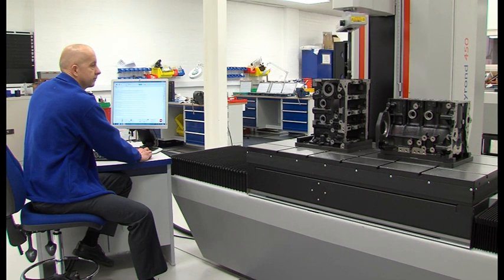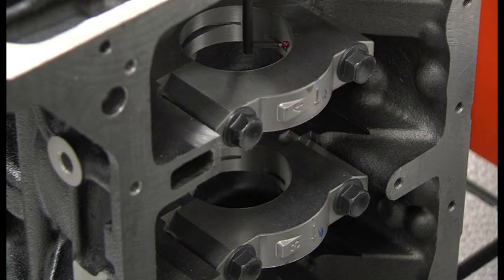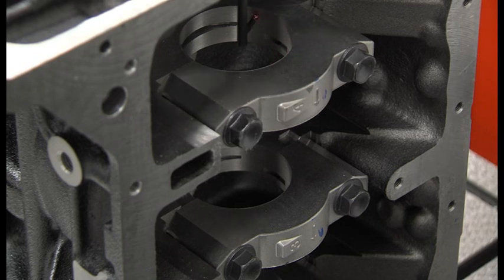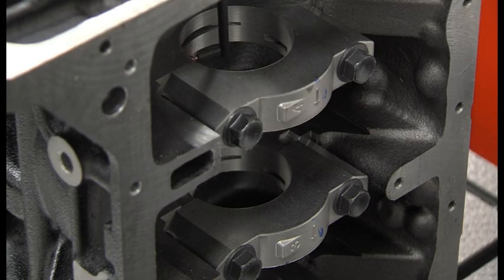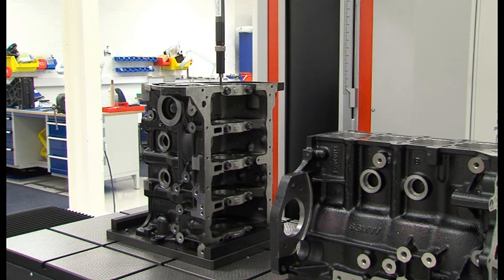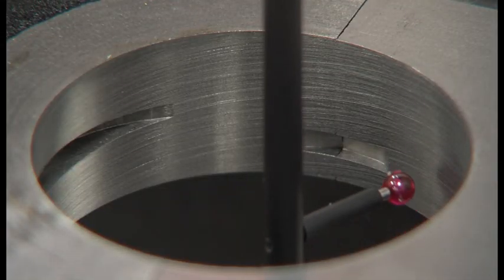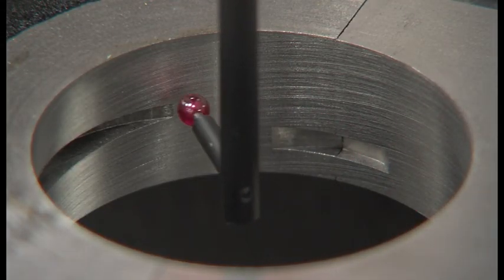Taylor Hobson's Ultra software, with its simple production interface, allows measurements of multiple features in complete automation. Parameters include cylindricity, roundness, straightness, flatness and parallelism.